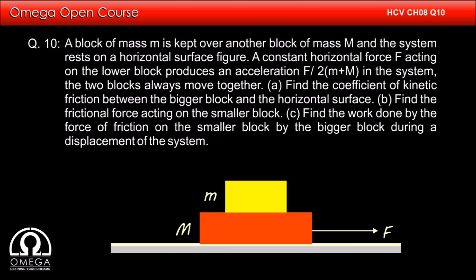A block of mass m is kept over another block of mass capital M, and the system rests on a horizontal surface. A constant horizontal force F acting on the lower block produces an acceleration F by 2 into M plus capital M in the system. The two blocks always move together.